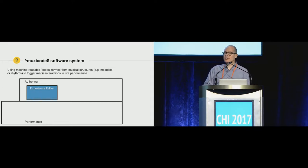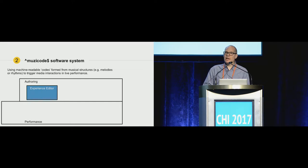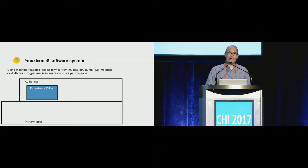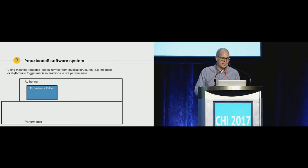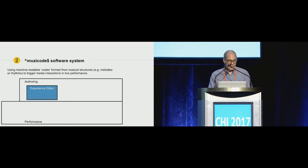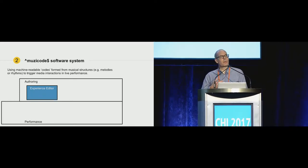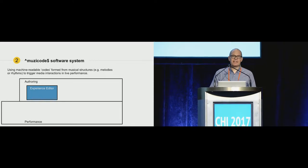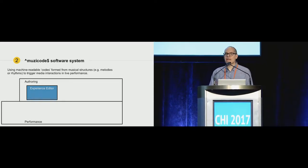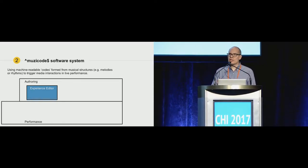Music Codes is a prototype system that enables musicians to compose and perform musical codes that act as triggers for media interactions in their live performance settings. Musical codes are effectively a series of notes and/or rhythms that form part of the music of a musical work that they may be playing in a concert situation.